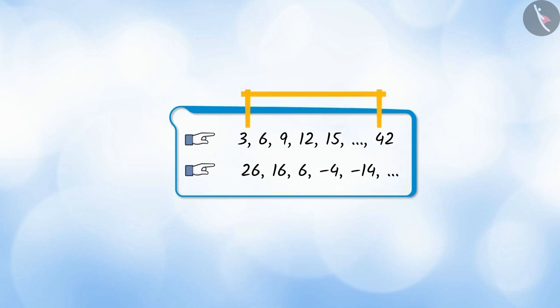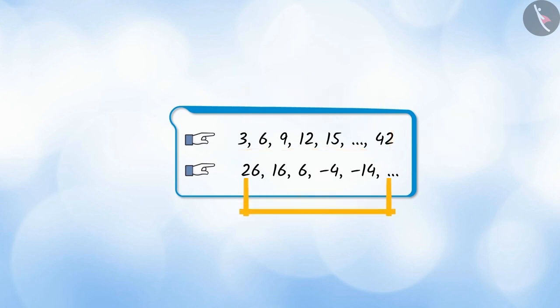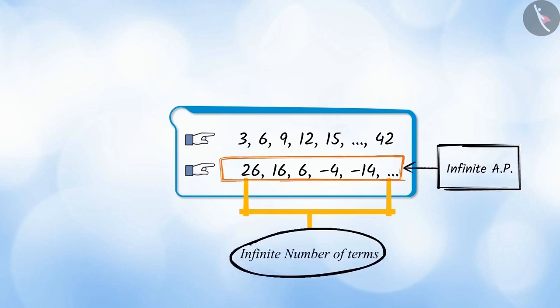If we observe the first AP, the number of terms is fixed. Such an AP is called finite AP. And the second AP does not have the last term, i.e. the number of terms is not fixed. Such an AP is called an infinite AP.